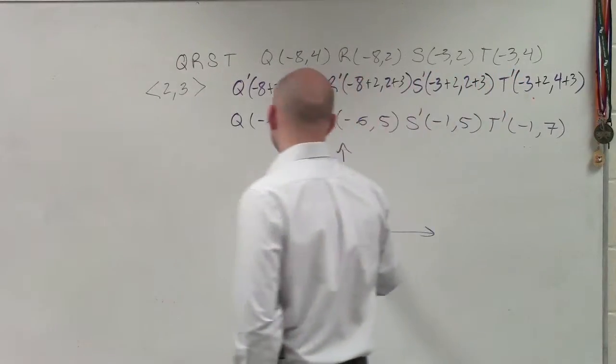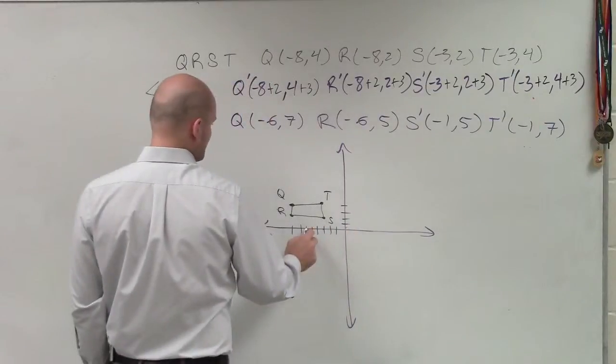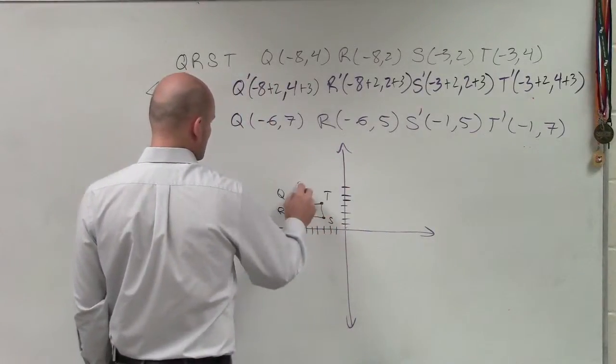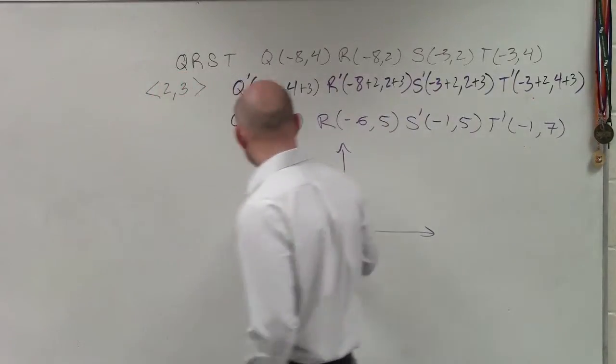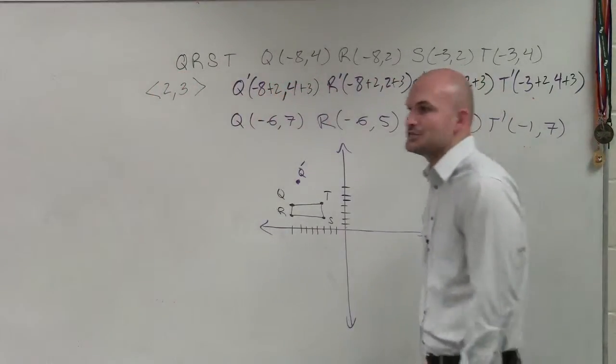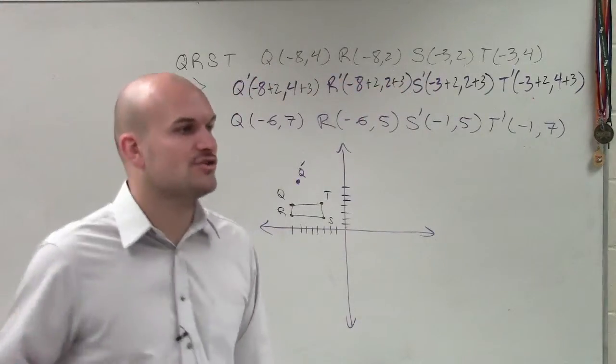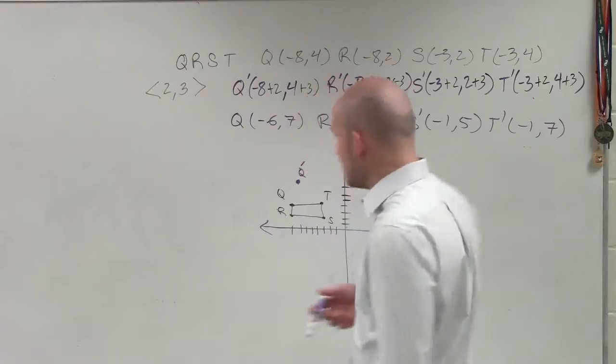So my transformed image is now at negative 6, up 7. And it's important, guys, when you're writing a new form, do not write it as Q again. It is Q prime. We applied now a transformation to it. So it's now Q prime.